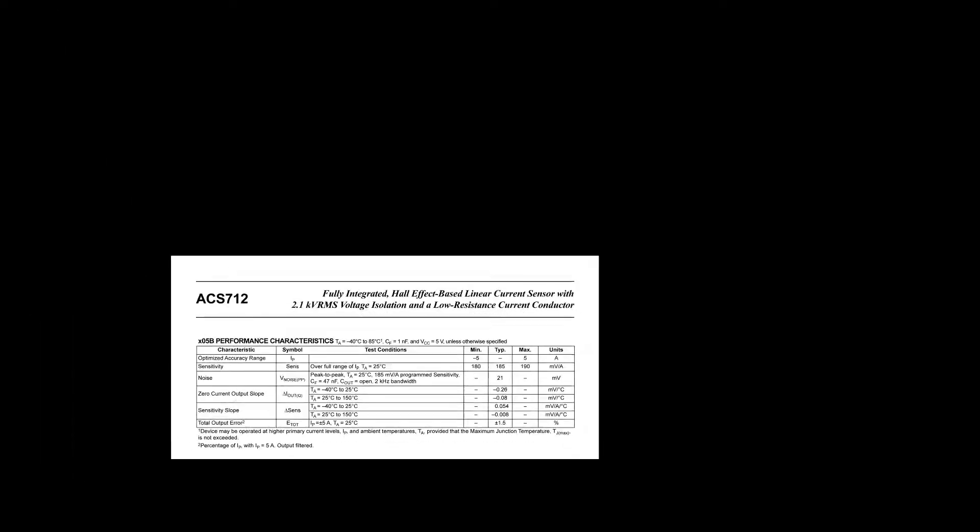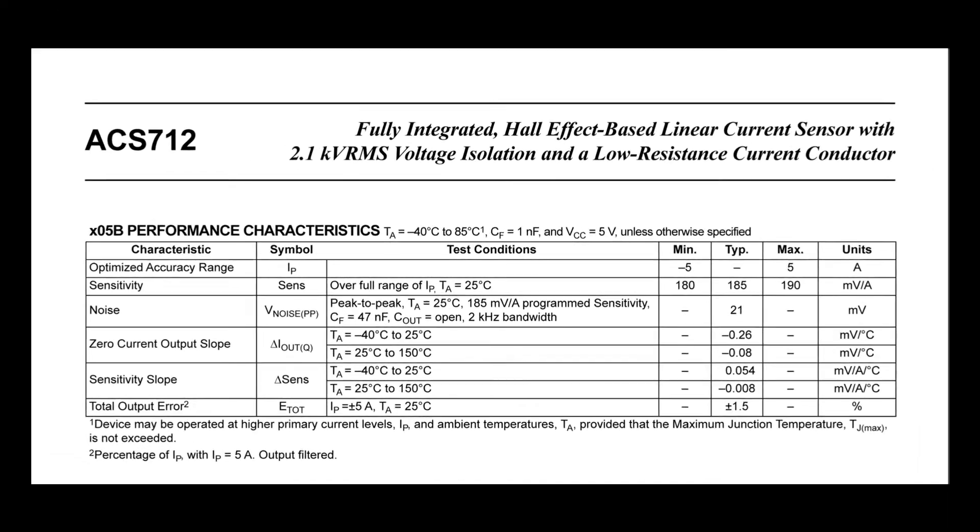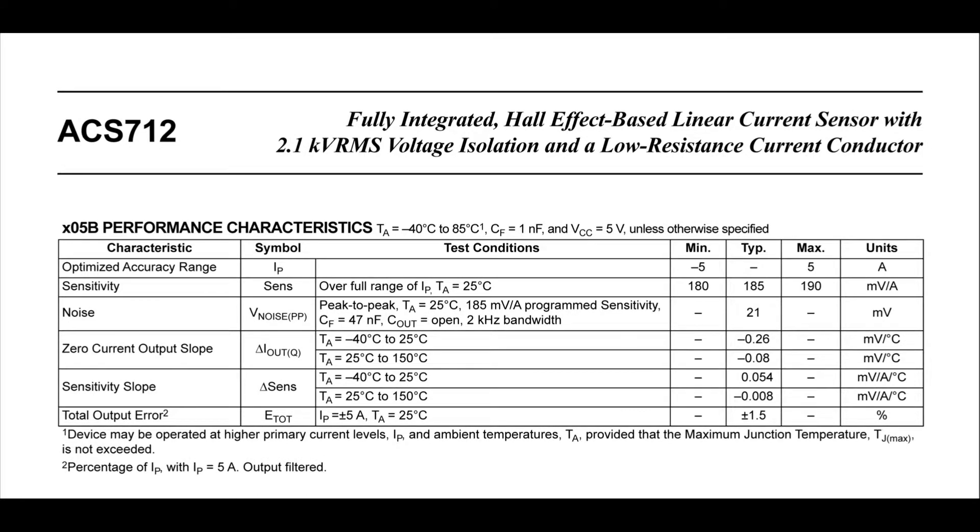If we take a look at the performance characteristics of 5 ampere module, we see that it has an optimized range of minus 5 ampere to 5 ampere and it has a typical sensitivity of 185 millivolts per ampere. It means whenever there is an increase of 1 ampere current through the sensor, it changes its output by 185 millivolts.